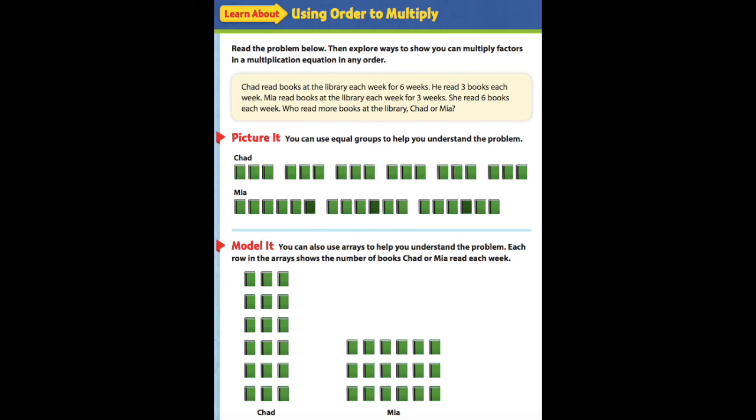But on Mia's, she read for 3 weeks. So we have 3 groups of books: 1, 2, 3. With those groups of books, she read 6 books each week. So we have a group of 6, another group of 6, and the last group of 6.